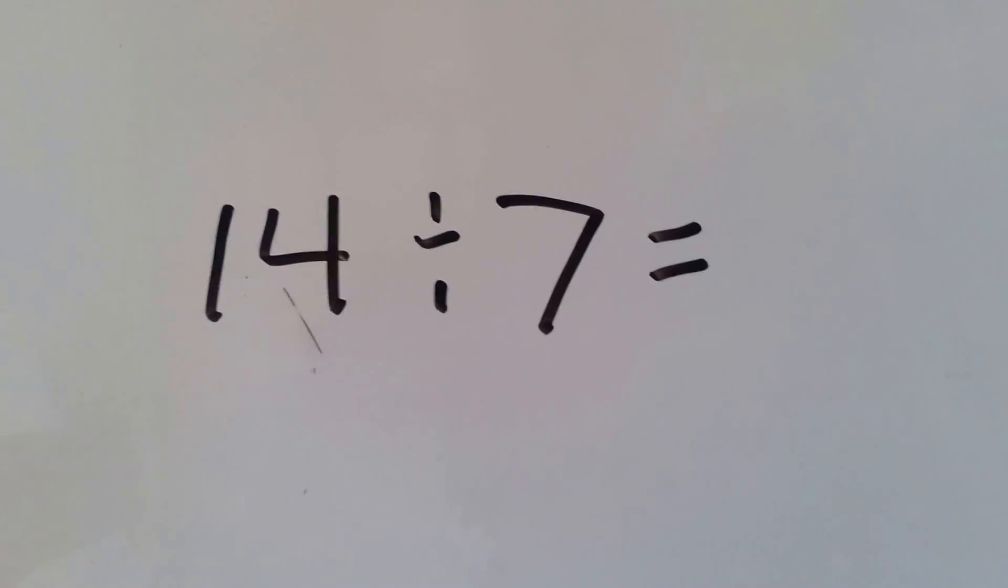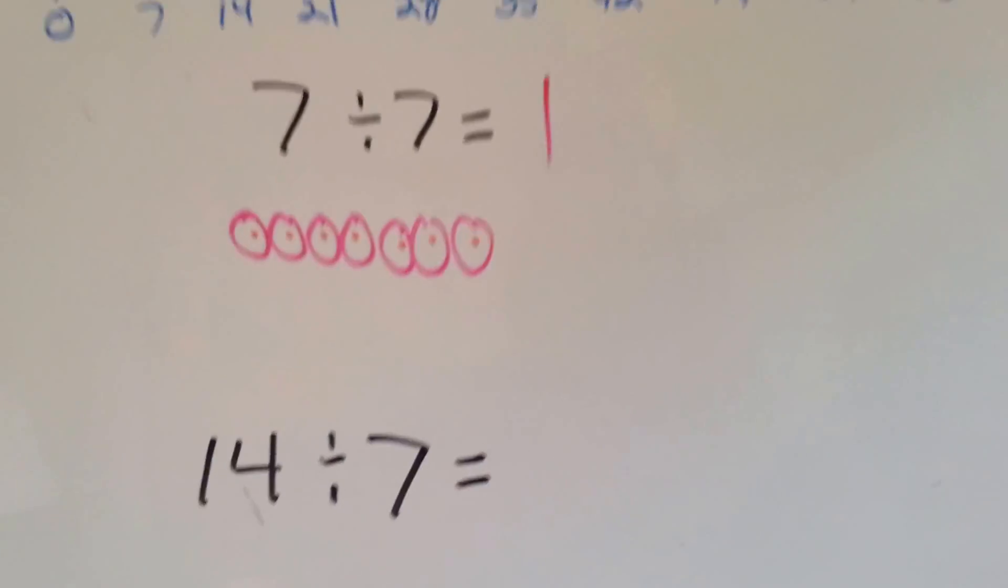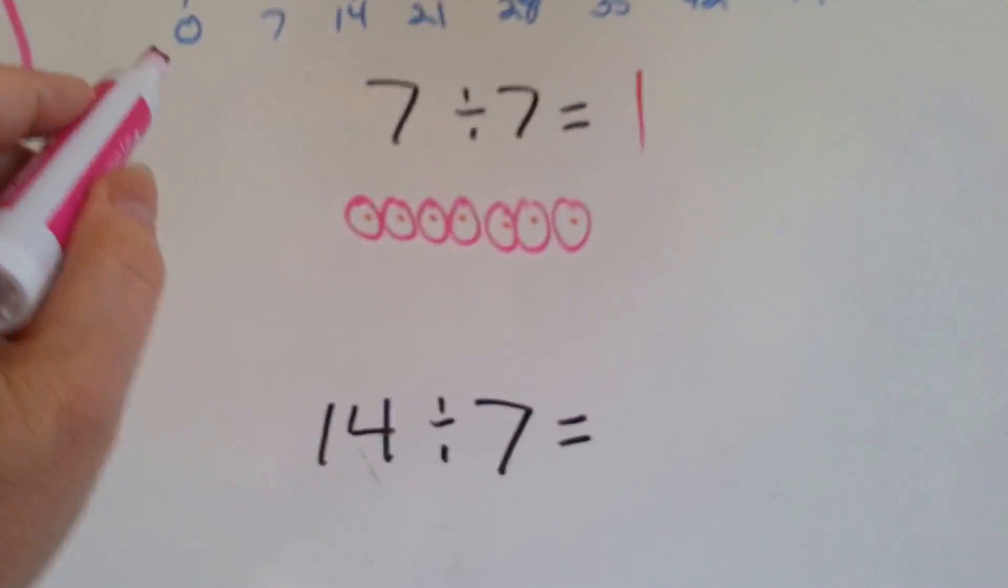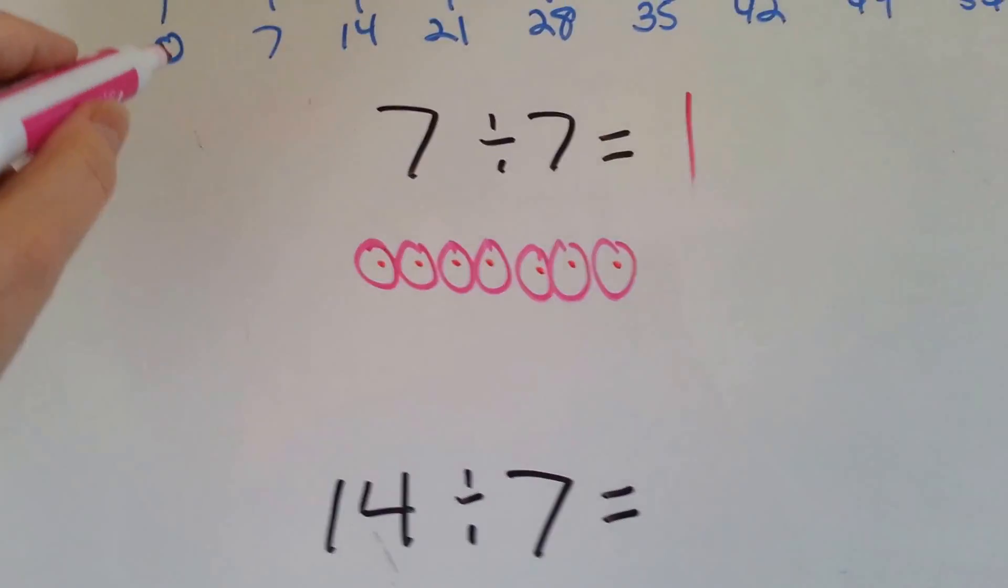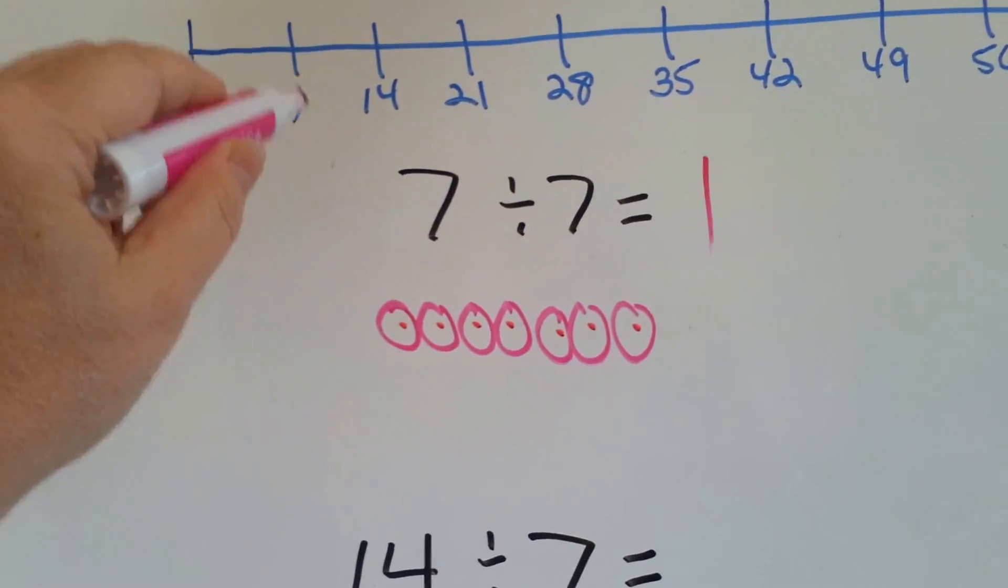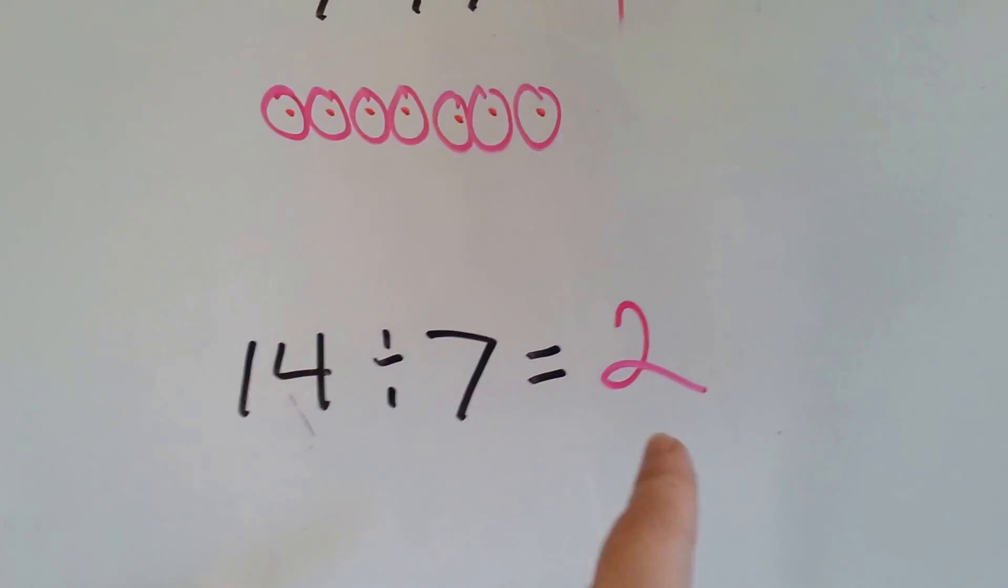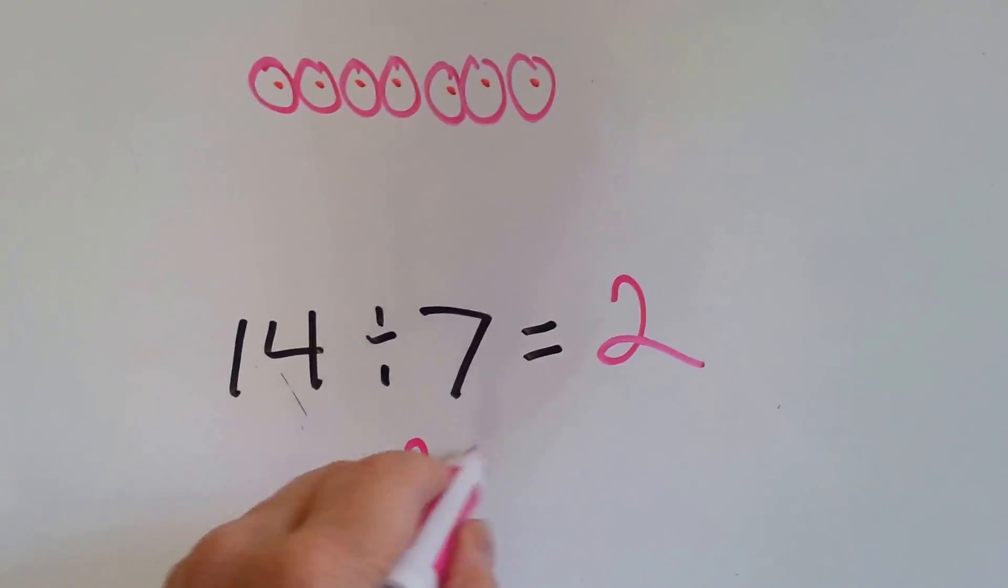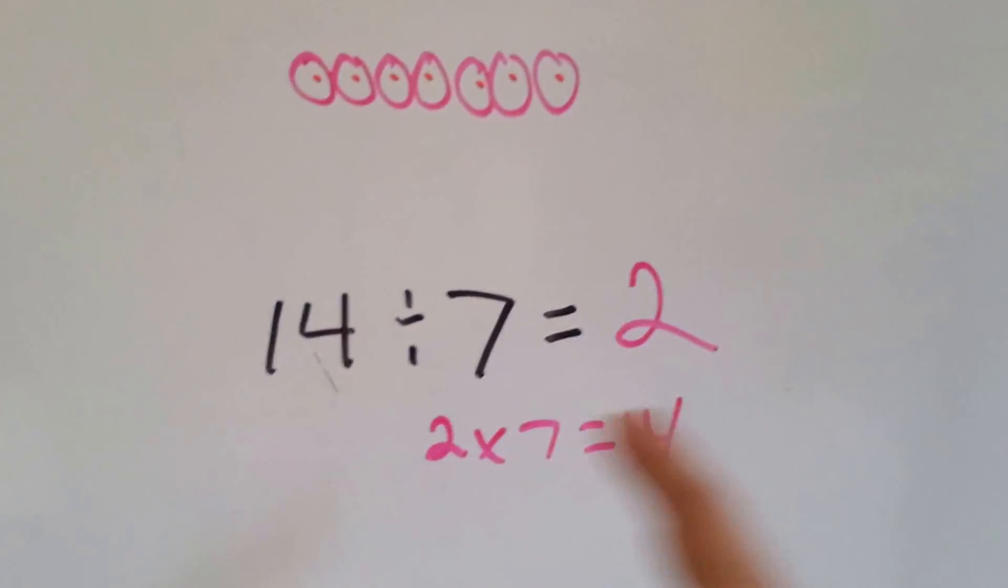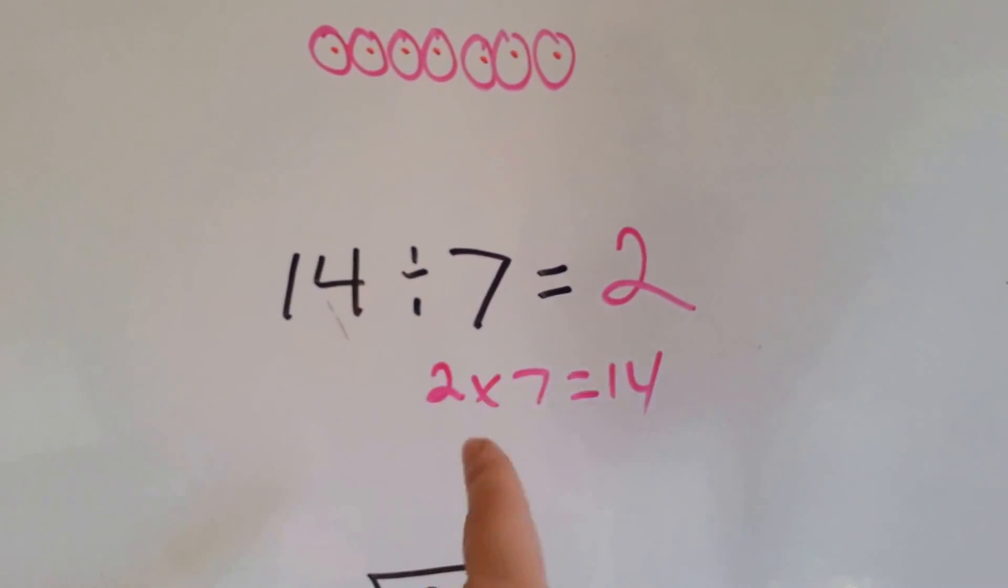Let's try this one. 14 divided by 7. Let's look at the number line. This number line counts by 7s going up. Let's see how many times we have to jump by 7 to get to 14. Ready? 1, 2. 2. 14 divided by 7 equals 2 because 2 times 7 equals 14.